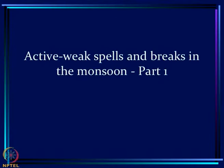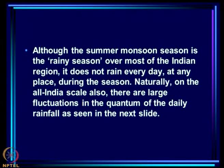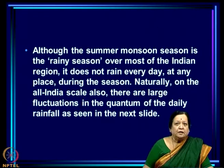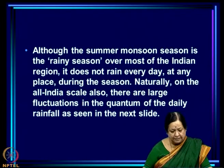Today, we are going to talk about a very important facet of the variation of the monsoon within the season — what we call the sub-seasonal or intra-seasonal variation of the monsoon, namely active and weak spells and breaks in the monsoon. The fluctuation between active spells and weak spells, or what are known as breaks in the monsoon, is what we will talk about today. Although the summer monsoon season is the rainy season over most of the Indian region, it does not rain every day at any place during the season. On the All India scale also, there are fluctuations in the quantum of daily rainfall.